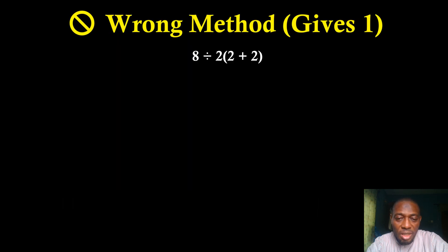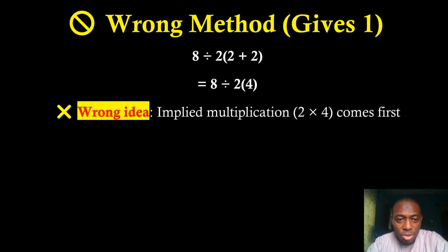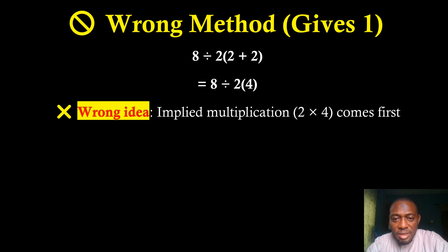The wrong way of doing this: first, solving the bracket is correct — 2 plus 2 gives you 4. But the wrong approach is to then multiply 2 by 4 first. The expression 2(4) is implied multiplication — it implies you multiply 2 by 4 — but doing that next is the wrong way of solving it.